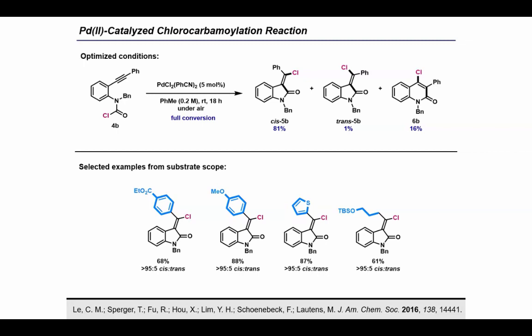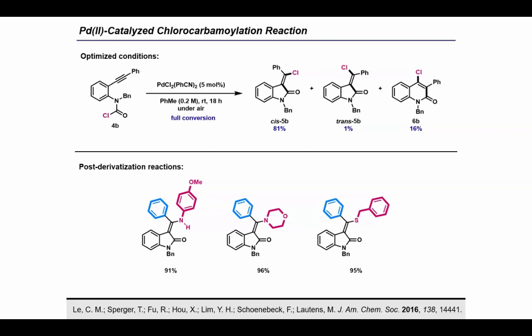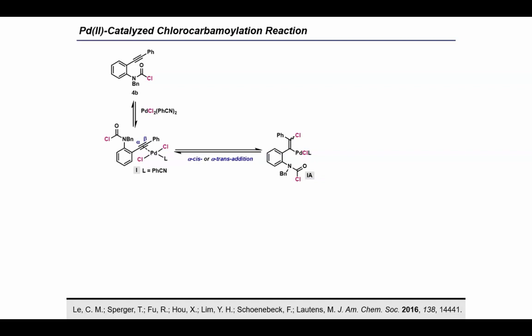More importantly, we were able to functionalize the vinyl chloride moiety with a variety of nucleophiles, providing access to some medicinally relevant scaffolds. A general catalytic cycle for this reaction begins with coordination of the substrate to the electrophilic palladium catalyst, which is accompanied by loss of one benzonitrile ligand to generate an eta-2 alkyne complex 1. From this key intermediate, several stereo- and regiochemical outcomes are possible for the alkyne chloropalladation step, the selectivity of which determines the final product distribution. In the alpha addition pathway, palladium inserts proximal to the carbamoyl chloride moiety, and this process can occur with cis- or trans selectivity.